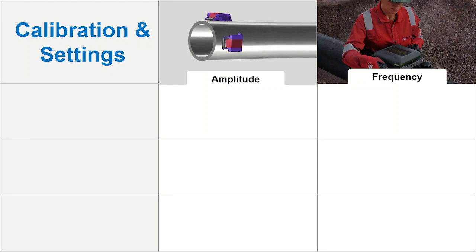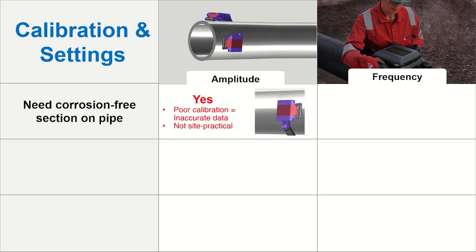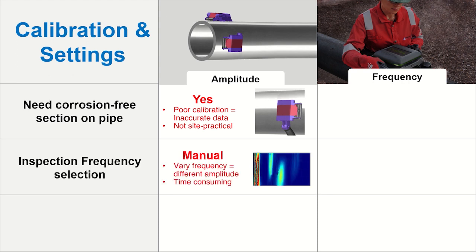When it comes to calibration and inspection settings, amplitude-based measurements such as MRUT require calibration from a corrosion-free section of the pipe. The amplitudes are also sensitive to the inspection frequency selected, which often needs to be manually selected by an experienced MRUT inspector.